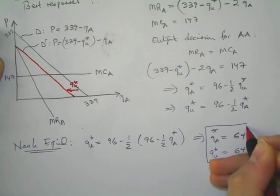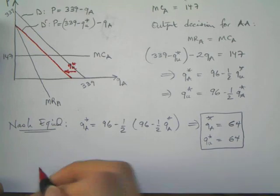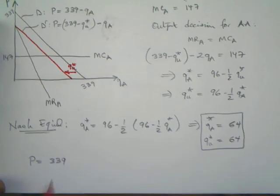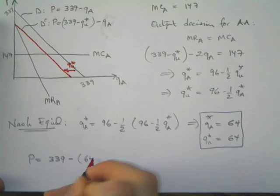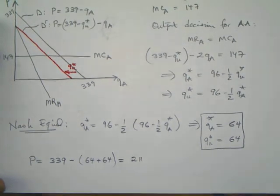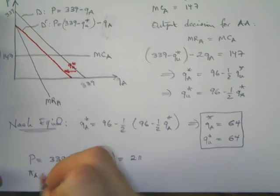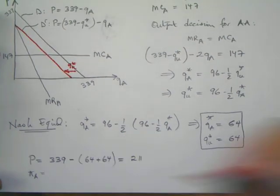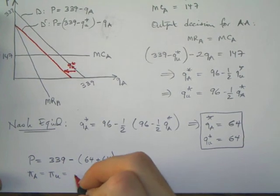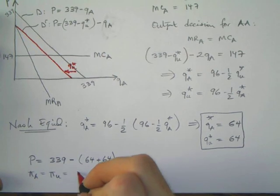These are the Nash equilibrium quantity choices by both firms. Now that we know these, it's also possible to find the prices. The price will be determined by the market demand: P equals 339 minus 64 plus 64, which equals 211. This is the market price.